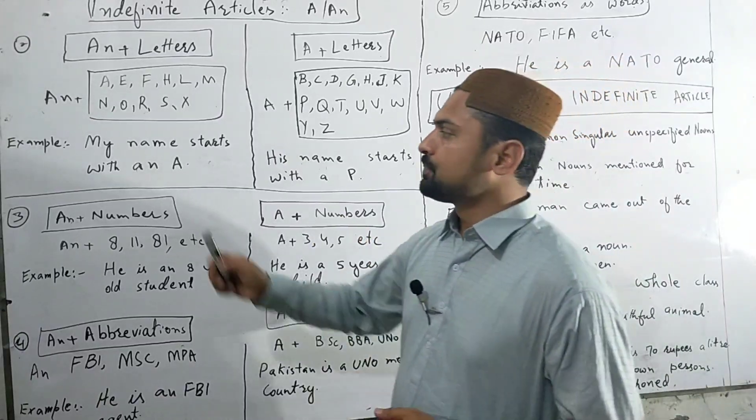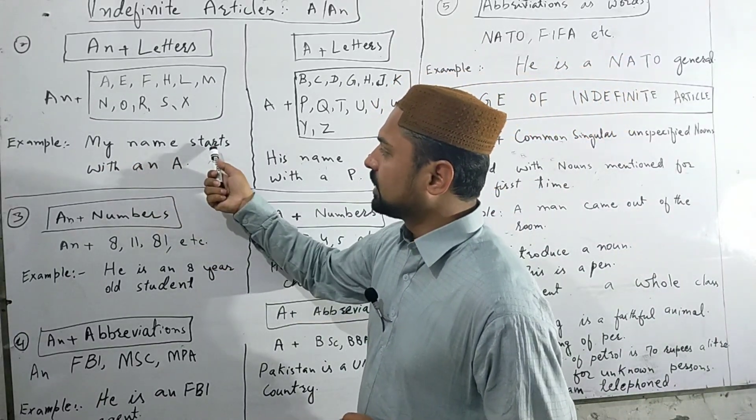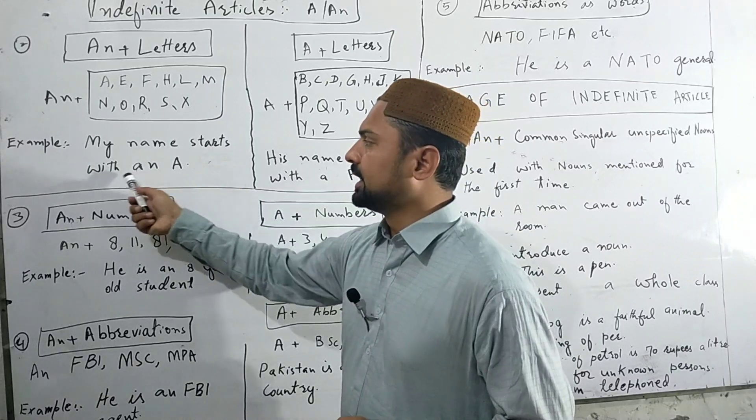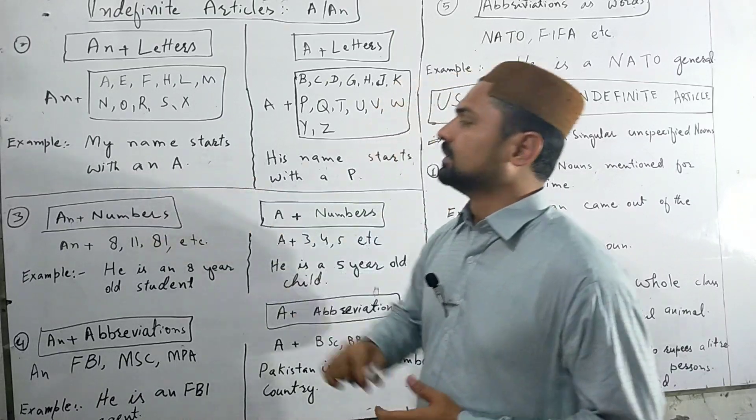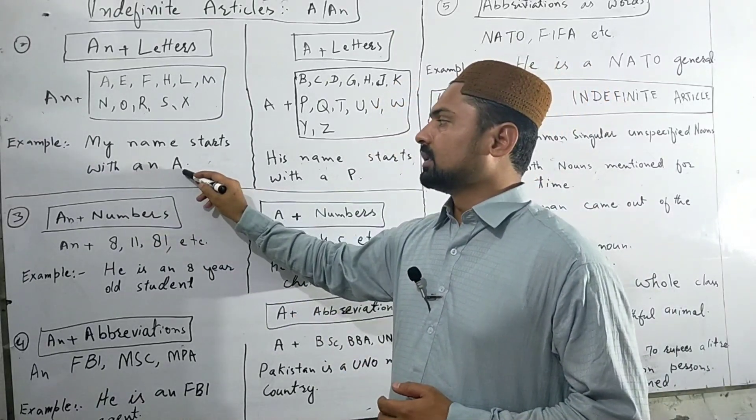For example, my name starts with AN A. So the article AN is used here because A is a vowel sound.